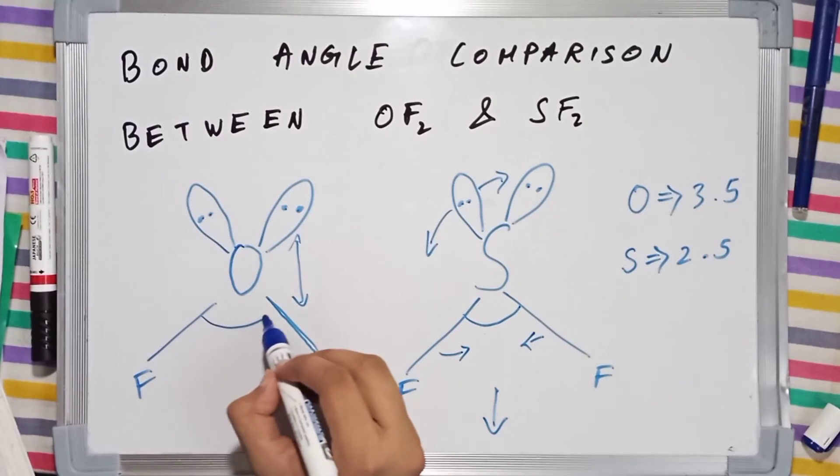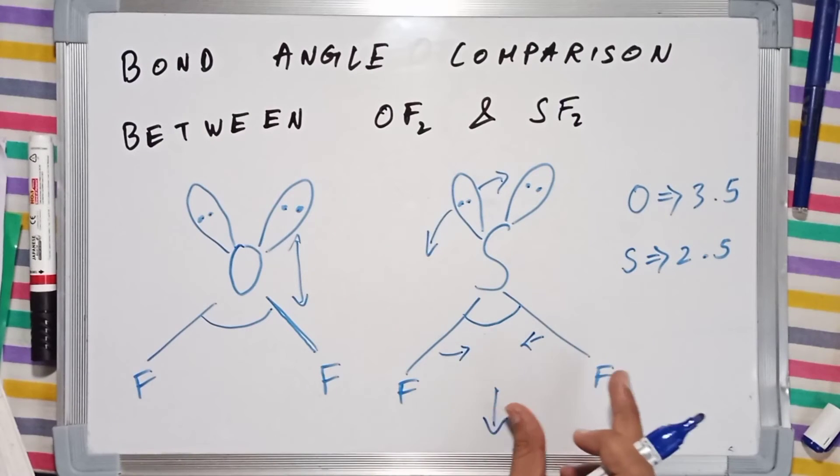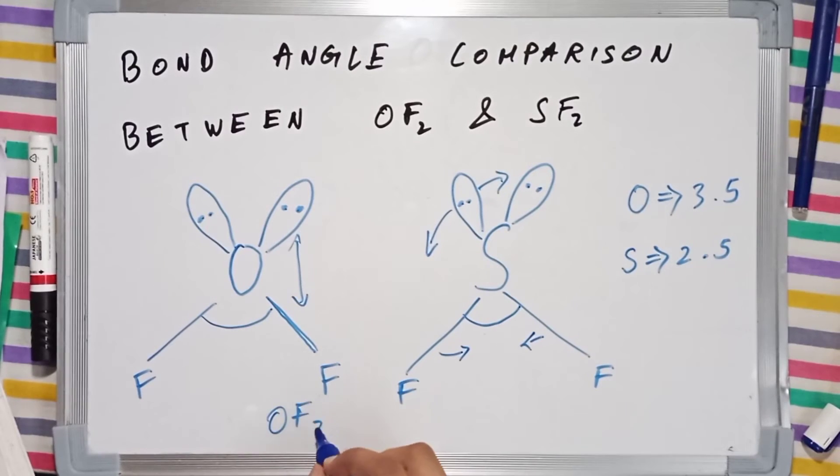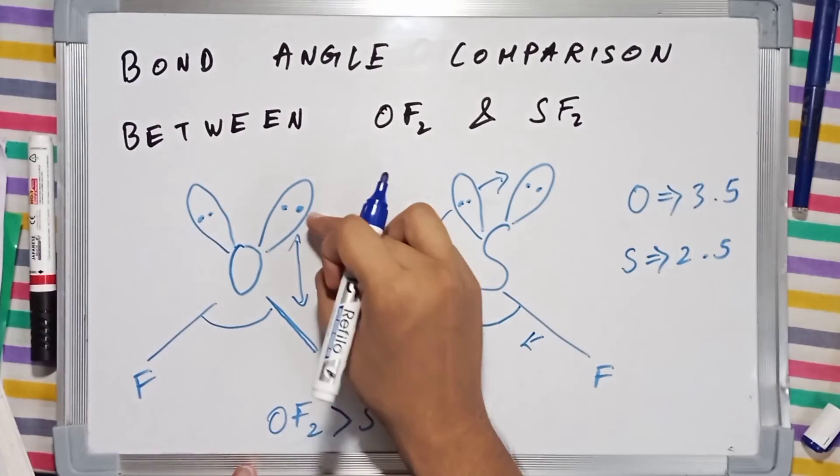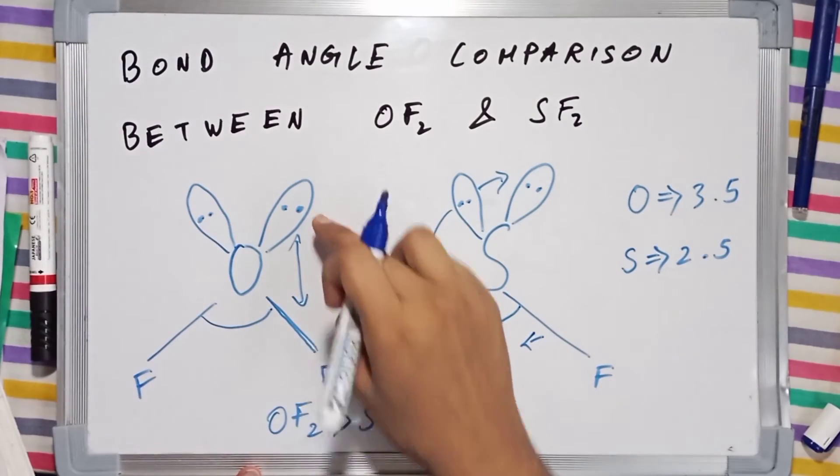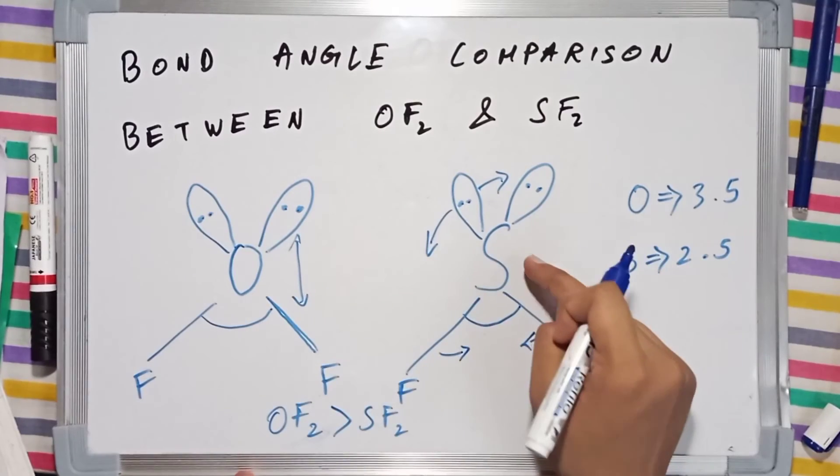So which bond angle will be higher? The OF2 bond angle will be greater than the bond angle in SF2 because the electrons in the lone pairs are not able to exert repulsion on these bonds in OF2, whereas in SF2